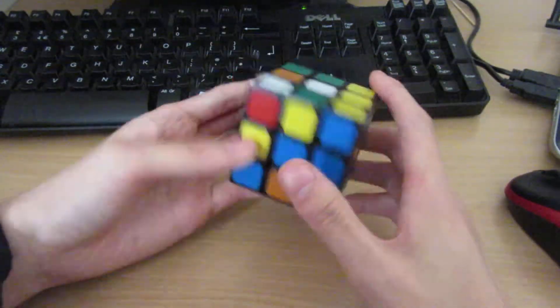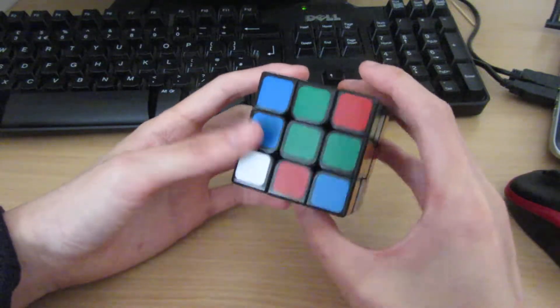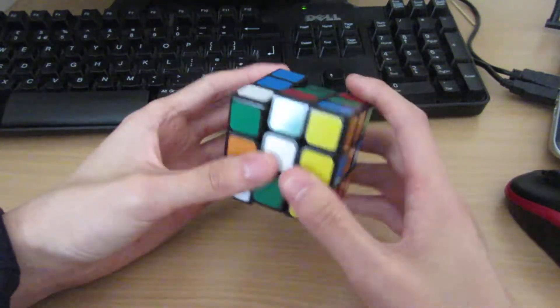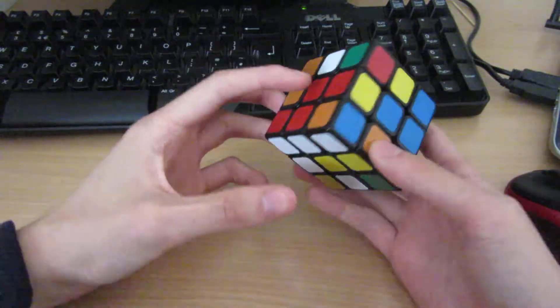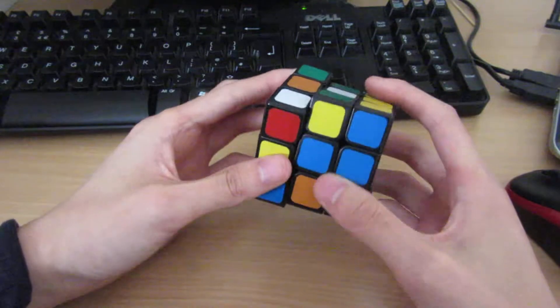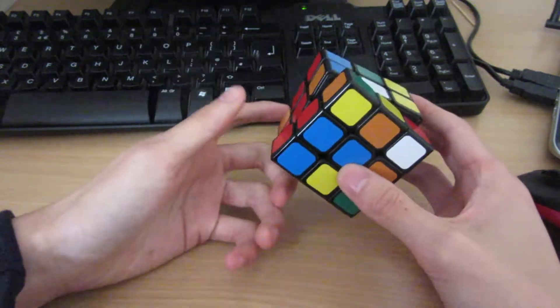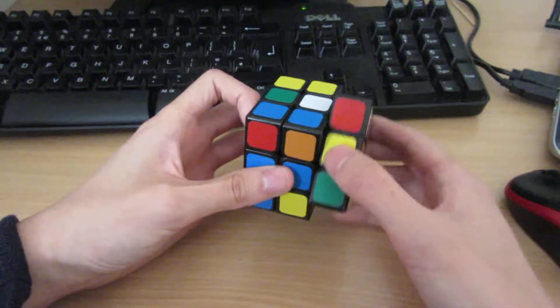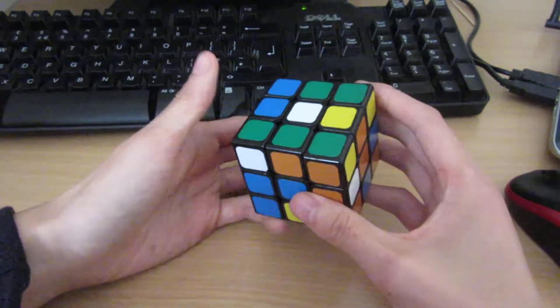Hey guys, so I got a few requests to do Roux method example solves, so I'm just going to do some now. This first scramble is pretty nice because this will go with this very easily. Let's do this, and that's fine. I saw that these will end up like this. I can just do it paired up.